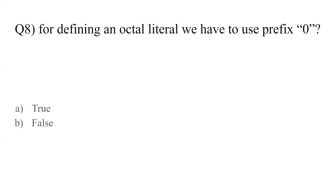Question number eight: for defining an octal literal value, we have to use prefix 0. The answer is true. Whenever you have to define an octal literal, you have to use prefix 0. This is how the compiler decides that the value is octal.